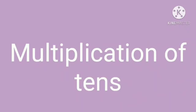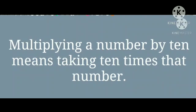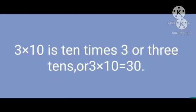Multiplication of tens. Multiplying a number by 10 means taking 10 times that number. 3 into 10 is 10 times 3, or 3 tens, or 3 into 10 is equal to 30.